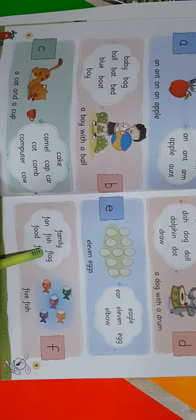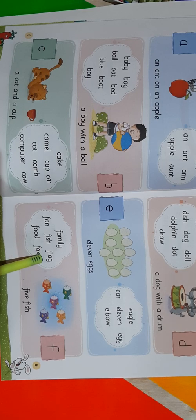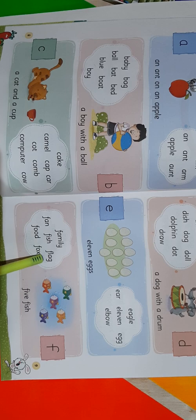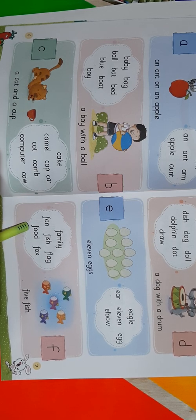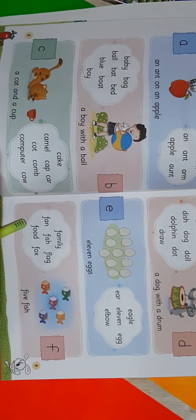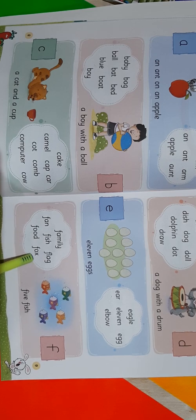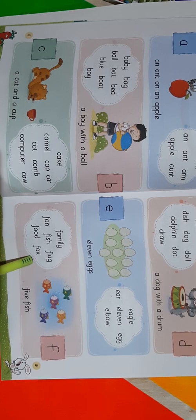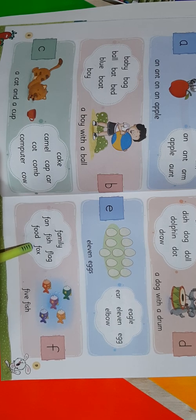Come to the next word: F-L-A-G, flag. F-L-A-G, flag. Read it once again: F-L-A-G, flag. Now come to the next word. It's F-O-O-D, food. F-O-O-D, food. F-O-O-D, food. Next word is F-O-X, fox. F-O-X, fox. Read it once again: F-O-X, fox.